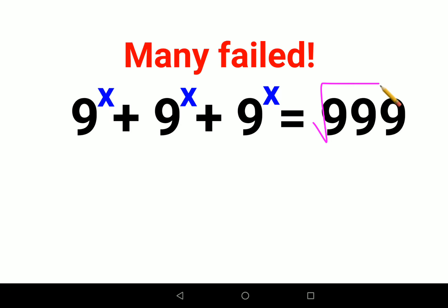First, we'll take 9^x as a common factor. I'm left with 1 + 1 + 1 equals 999, which simplifies to 9^x times 3 equals 999.